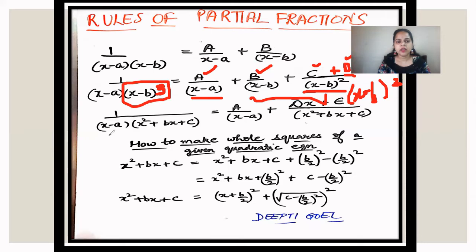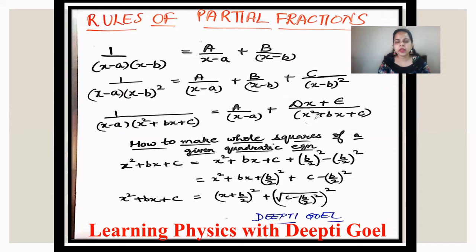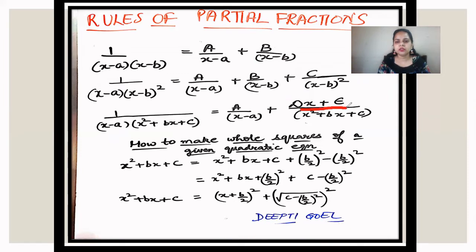If we have a linear root and a quadratic factor in the denominator, we express it as A over (x minus a) for the linear root, and (Dx plus E) over (x squared plus Bx plus C) for the quadratic factor. Take the LCM, multiply out the numerators, collect terms of x squared, x, and constants, compare with the left-hand side, and get the values of A, D, and E.